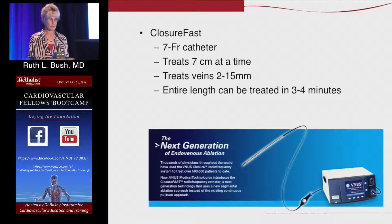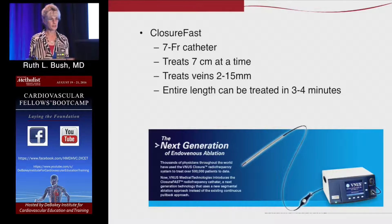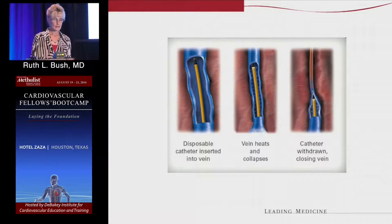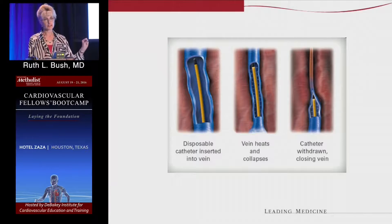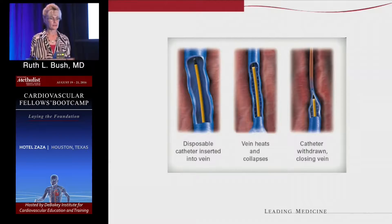One thermal technique is the ClosureFast catheter by Venous — now owned by Medtronic, I believe. It's a seven-French catheter; you put in a standard sheath just like you do for endovascular cases. It's easy to see under ultrasound, segmentally treats the vein, and is fairly fast. As I describe to my patients, we're cauterizing the inside of a vein — sealing it shut like a Ziploc bag. You're not removing the vein; it becomes fibrotic over time. Thinner patients can feel a cord in their thigh which will get smaller over time.